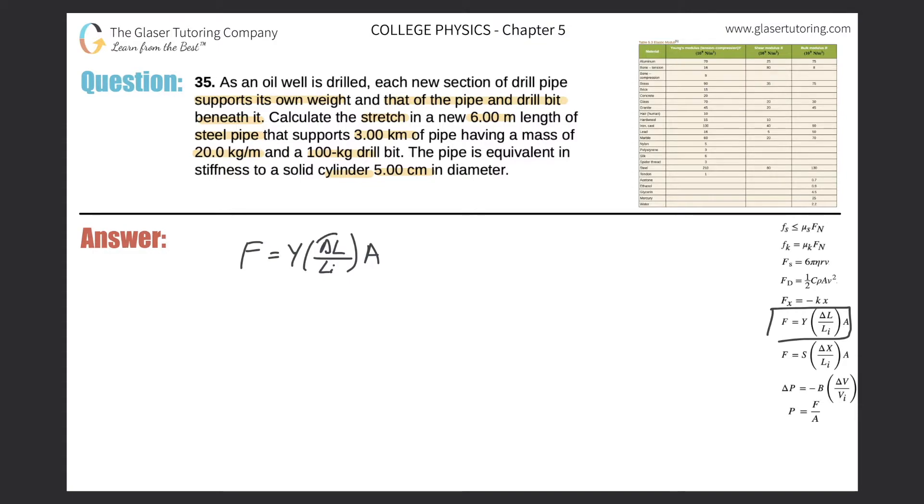So let's just solve this formula for delta L. How do I do that? Well, these values are in the numerator on the right hand side, so the trick would be put them in the denominator on the left hand side, so that'll be YA. This value's in the denominator on the right hand side, so put it in the numerator on the left hand side.